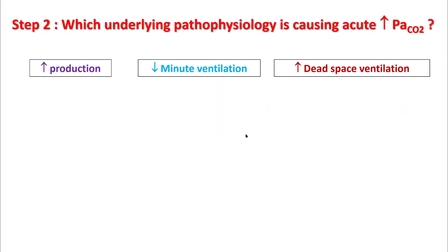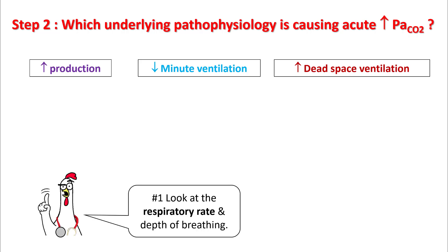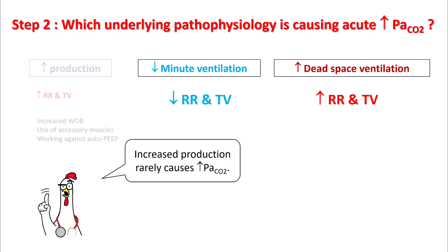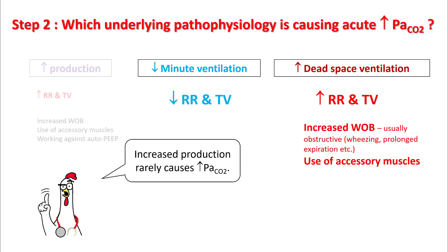Next step is to figure out which underlying pathophysiology is causing increased CO2 levels. Elevated CO2 is due to increased production, decreased minute ventilation, or increased dead space ventilation. To differentiate these three, observe your patient: look at their respiratory rate, depth of breathing, and accessory muscle use. Patients with increased production and increased dead space ventilation will have faster respiratory rates and tidal volumes. Patients with decreased ventilation, by definition, will have low rates and low tidal volumes and will not be distressed. Patients with dead space ventilation will have increased work of breathing, and since this is usually obstructive in nature, you would be able to auscultate wheezing, observe prolonged expiration, and there will be use of accessory muscles.